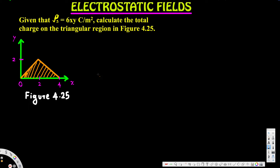Hey, what's going on guys. Let's look at this problem right here. This question is asking: given that ρs is equal to 6xy coulombs per meter squared, calculate the total charge on the triangular region in figure 4.25. Here we have the figure and also we have the triangular region.